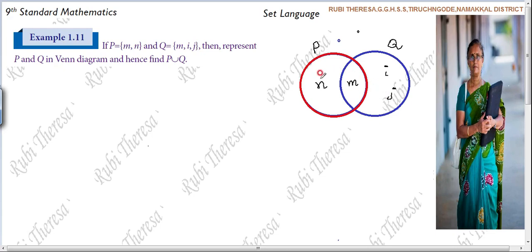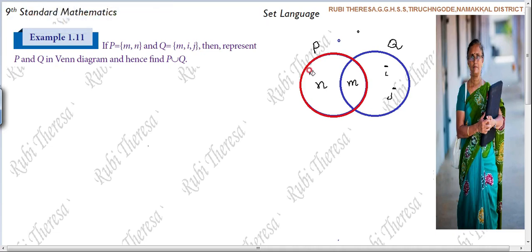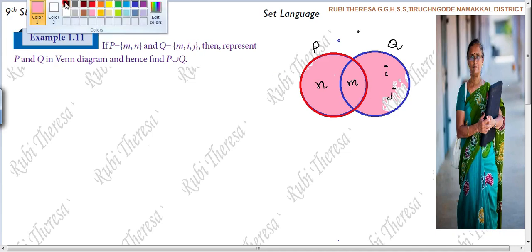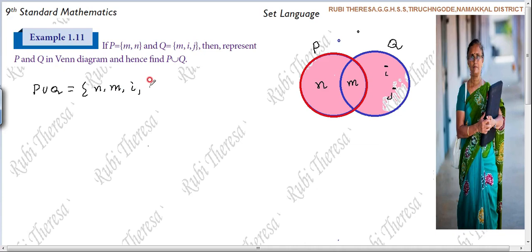Now union of P and Q. P union Q. Actually what is P union Q here? Tell me. Very good. This is P union Q. So P union Q equal to what is it? N comma M comma I comma J. So P union Q. We don't affect the value if you change the place and write. I, J, M, N. M comma N comma I comma J. Do you follow all of you?